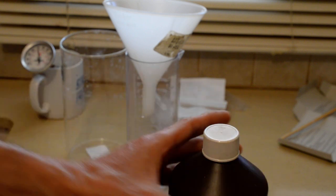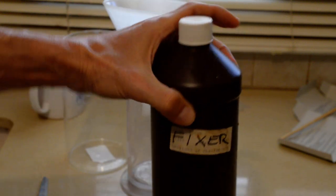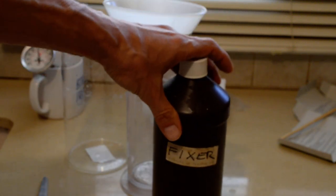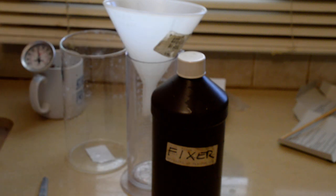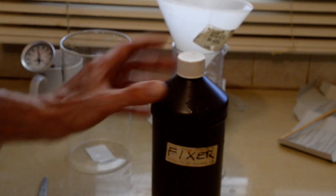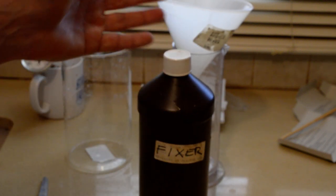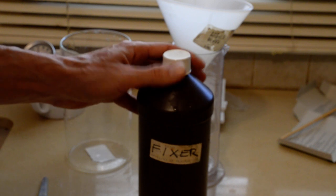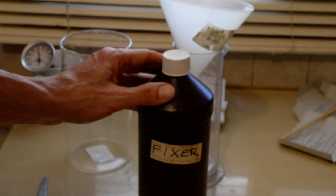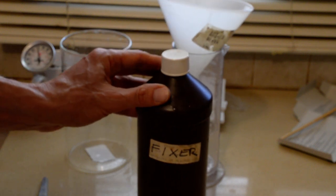And I now have 750 milliliters of fixer, which is fine because my developing tank does not take more than 750 milliliters. In fact, I think it maxes out at about 600. So that's plenty of fixer for film for me. The way I develop, anyway. In a standard Patterson tank for 35 millimeter, 750 milliliters of fixer is plenty. In fact, it's a little more than you need.